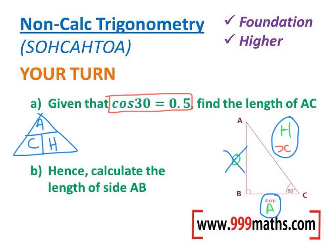So the adjacent for me is 4, divided by cos, which will be cos of 30. You might also write this as 4 divided by cos of 30.